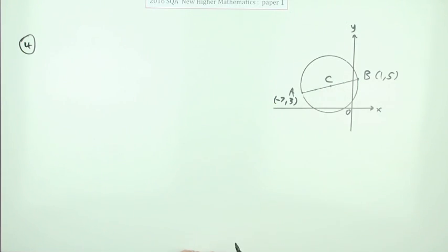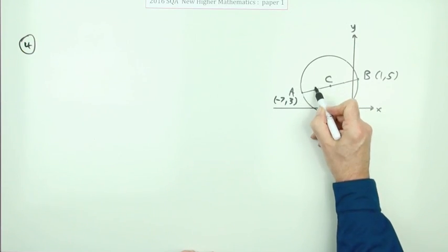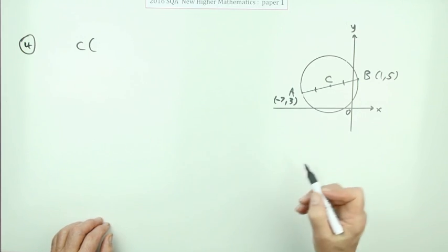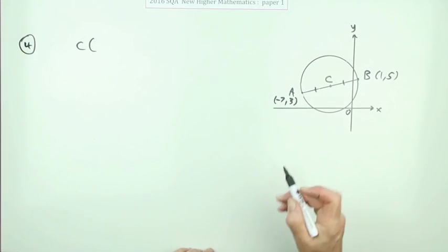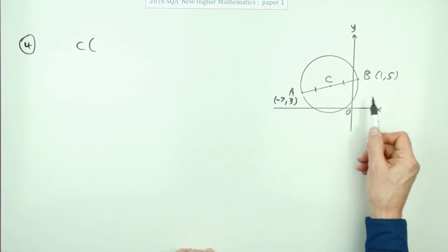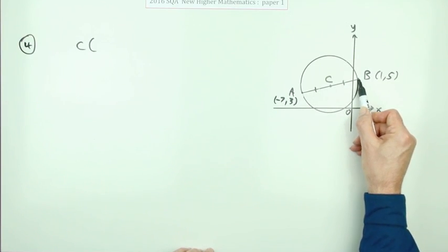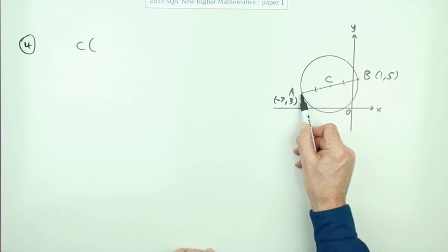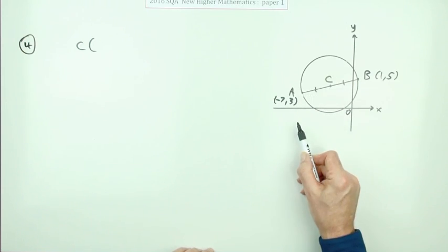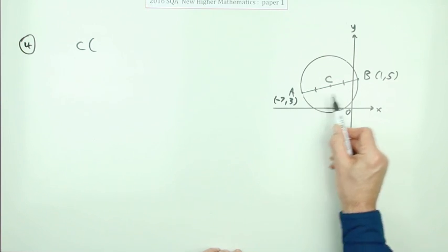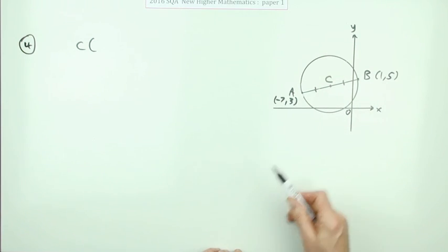First thing is, where's the centre? If that's a diameter, the centre must be halfway between the points A and B. And the first mark would be for simply stating that. You could show the calculation if you like, but sometimes it's quite obvious. If that's halfway along the line AB, then its x-coordinate will be halfway along the difference in the x's, and the y-coordinate will be halfway along the difference in the y's. Halfway between three and five is four. You could put that straight away.